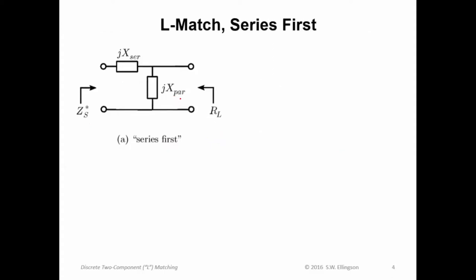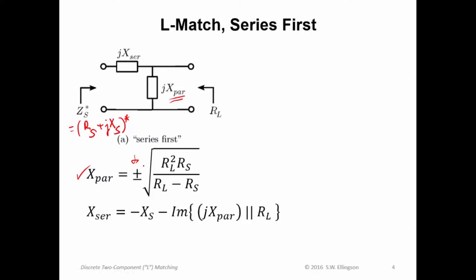Let's do the series first case. I'm just going to give you the solution, and then I'll explain why it works. The reactance that goes in parallel here in the series first circuit is given by this expression, plus or minus. So you see right away there's two possible solutions. Square root of R sub L squared R sub S over R sub L minus R sub S. Now, what is R sub S? We're calling Z sub S here R sub S plus J X sub S, like so. So R sub S is the real part of Z sub S. First you get X sub par, the reactance that goes in parallel with the real valued impedance. And there's two possible solutions there.